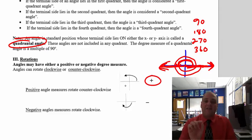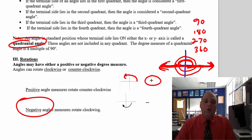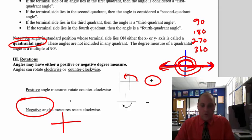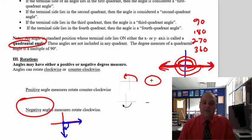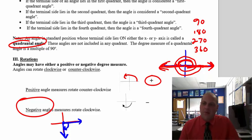Positive angles rotate counterclockwise, just like I've been doing. A negative angle rotates clockwise. The starting spot is the same — same initial side. But if I want to draw a negative angle, I go clockwise. So that's negative 90 right there. That would be a negative 90-degree angle, with a little arrow showing the direction you went in.